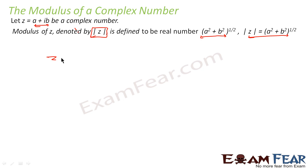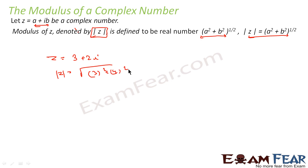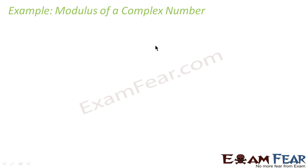Let's take one example. Let z = 3 + 2i. In this case, |z| = √(3² + 2²) = √(9 + 4) = √13. Please note: |z| = √(a² + b²). Let's take one more example to solidify our concept.